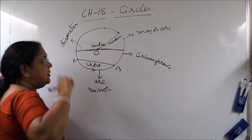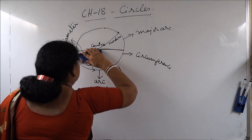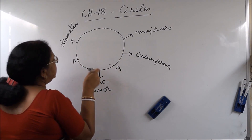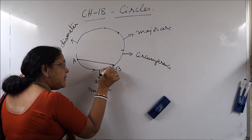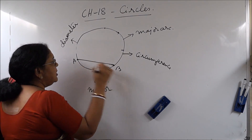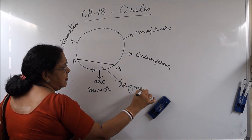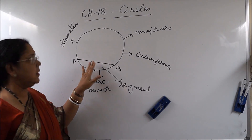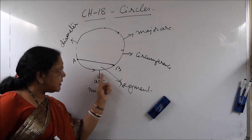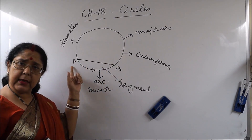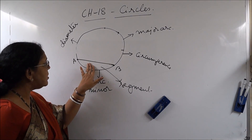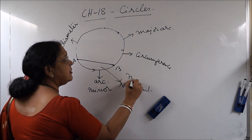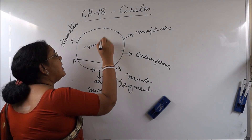The area bounded between an arc and a chord is called a segment. So the space or the region between the chord and an arc — a part of the circumference — is called a segment. There are two segments: the smaller one is called the minor segment and the bigger part is called the major segment.